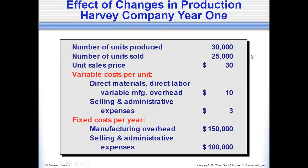Sales are constant and number of units produced is 30,000. At this point, absorption costing income will be higher by the unit cost of fixed manufacturing overhead. That's $150,000 divided by 25,000, which is $6 per unit. For this particular case, it's $150,000 divided by 30,000, which is $5. The difference is 5,000 units — production is higher than sales by 5,000. So 5,000 times $5 equals $25,000, and absorption costing would be higher than variable costing.